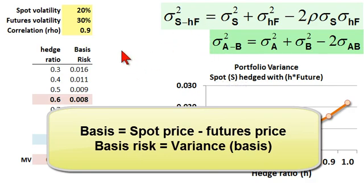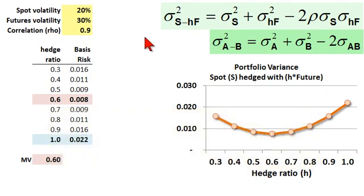First, what is the basis? It's the difference between the spot and the futures price. Notice that requires two positions: ownership in the underlying spot, and then hedging with the short futures contract. If the basis is the difference between the spot and the futures price, then basis risk is the variance of that difference. The formula is right here in light green.